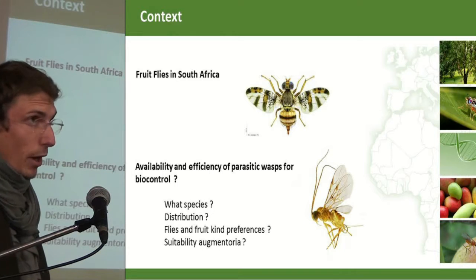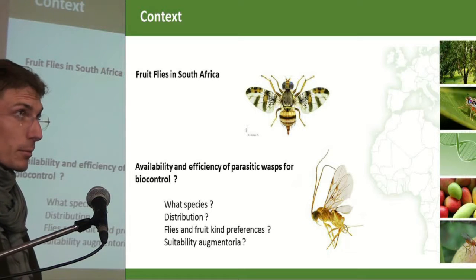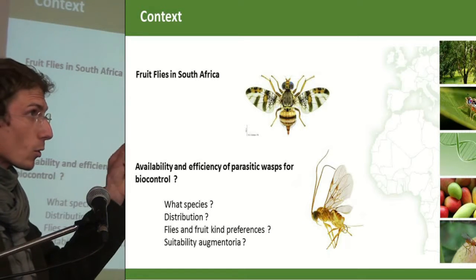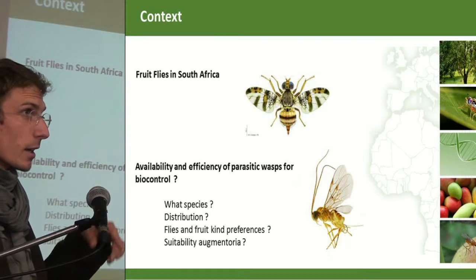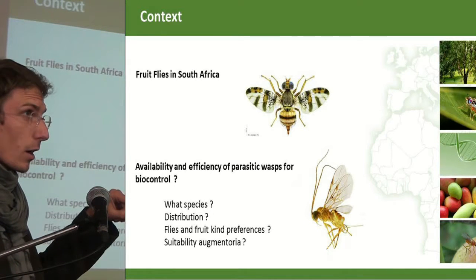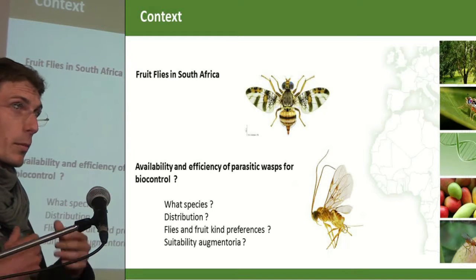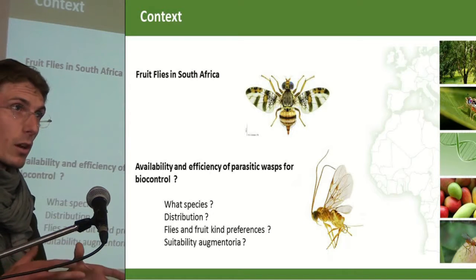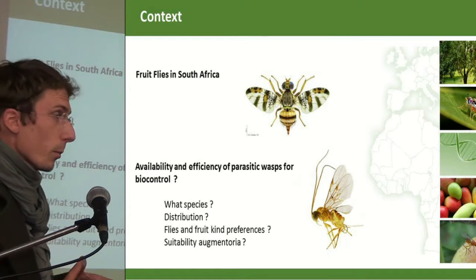The Hymenoptera parasitoids are little wasps that lay their eggs in the eggs of the fly or in the larvae, and by developing inside the larvae, they kill the pest.